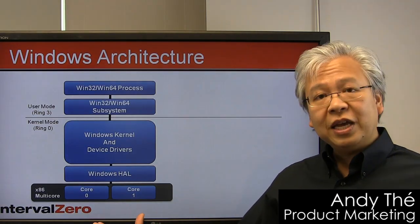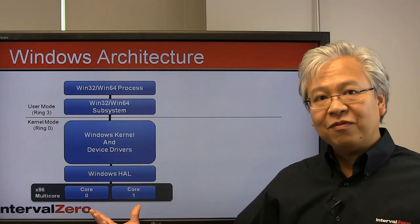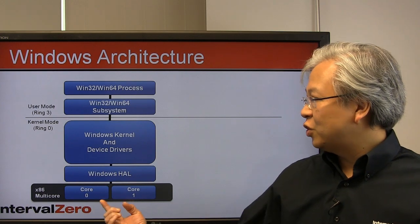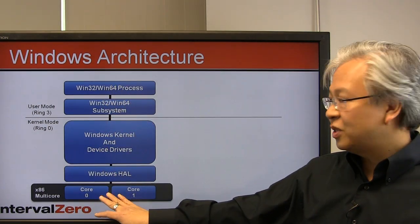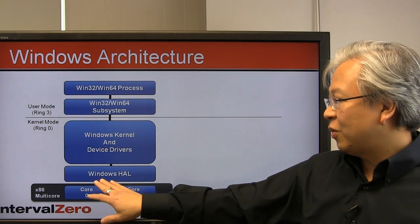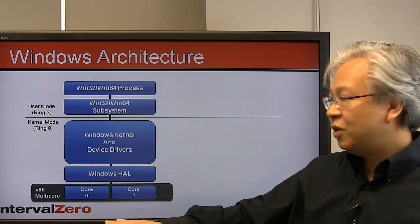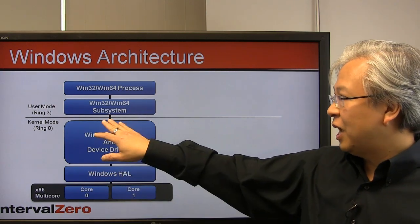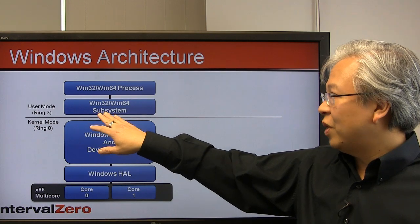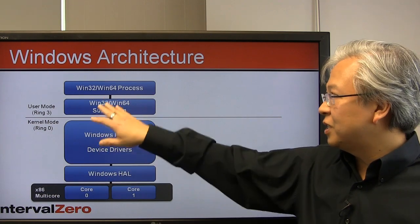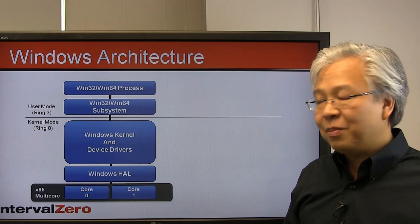If you look here, this is a standard dual-core x86 platform with two cores. Here is the standard Windows stack: we have the Windows HAL layer, the Windows kernel, and then crossing into user space we have the Win32 or Win64 subsystem with the application sitting on top.